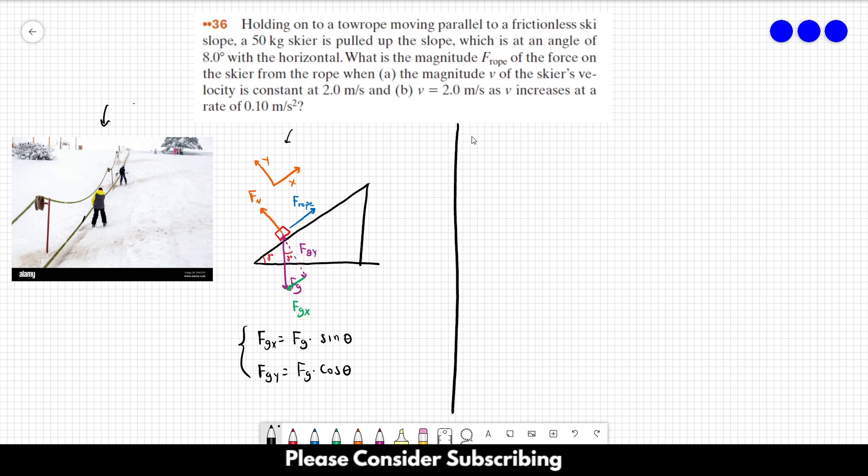Now we have to write Newton's second law for each component separately. We are going to write this equation. The sum of the forces is equal to mass times acceleration. In the x direction, which is the only one that we need, we have two different forces: fgX and f rope.